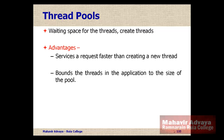Thread pools also bound the number of threads in an application to the pool size. There is a default pool size according to which threads are created and utilized. For example, a web server creates a number of threads to satisfy user requests for accessing a web page. If all threads are busy, the user must wait until a thread becomes free.